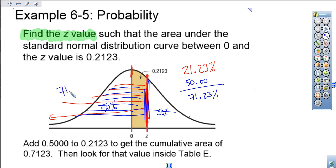That's my 71.23 percent. Remember, we convert that back to a decimal. That gives me 0.7123. That is the area or the percent that I'm going to go and find on my Table E. So let's go find that.